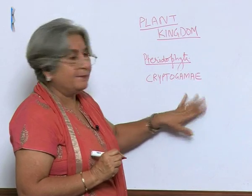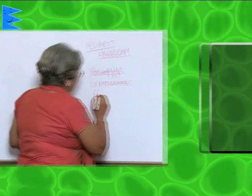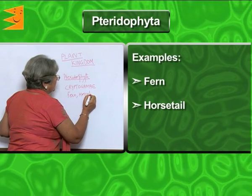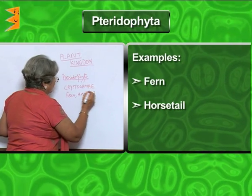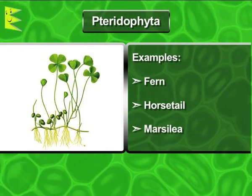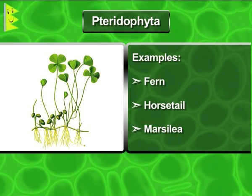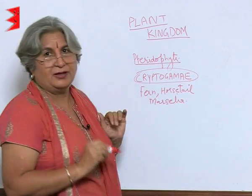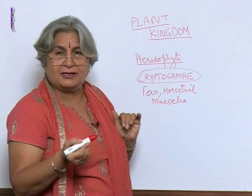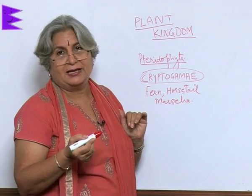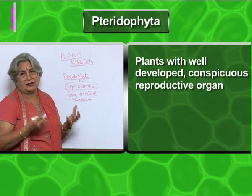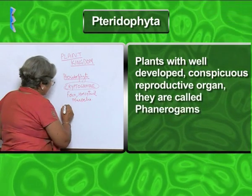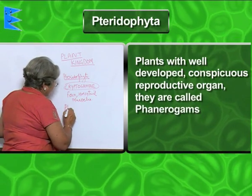Examples of pteridophytes include fern, horsetail, and marsilia. Now, the other groups we are going to study have very well developed and conspicuous reproductive organs, and that is called phanerogamae.